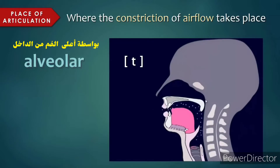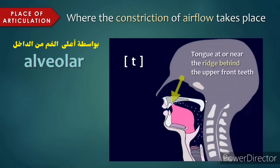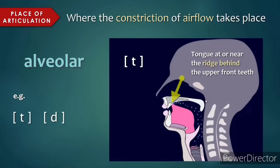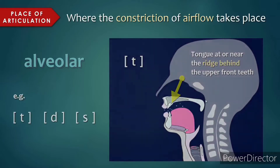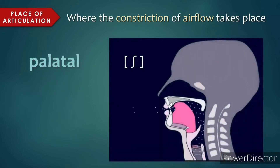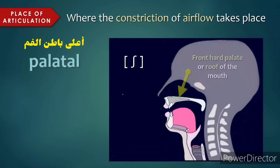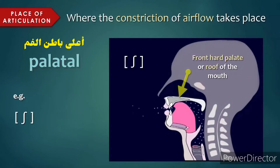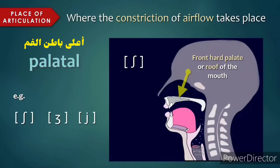Alveolar sounds are produced with the tongue at or near the ridge right behind the upper front teeth, such as t, d, s. Palatal sounds are produced at the hard palate, or the roof of the mouth, such as sh, zh, y.